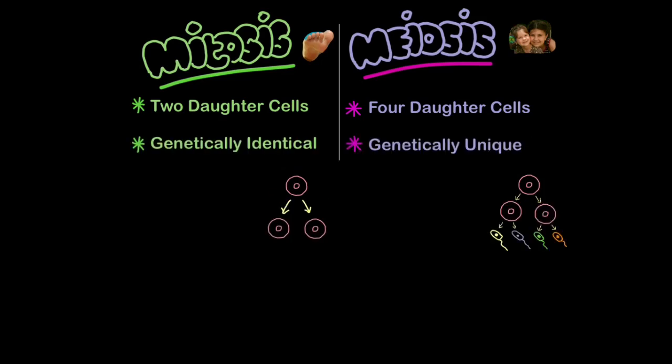Secondly, in mitosis, the cells that are created are genetically identical. That means the cells produced, the daughter cells contain exactly the same number of chromosomes with exactly the same genes on them. In other words, no variation between the cells. In meiosis, the cells that are created are genetically unique. In other words, varied. So you can see that I've drawn them in different colors here to represent the fact that they're not exactly the same as each other.